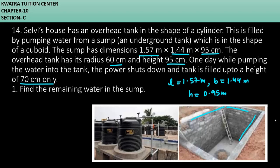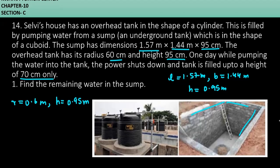And then you have a cylinder. The radius of cylinder is about 0.6 meter. The height is about 0.95 meter. What we have to find is remaining water in the sump. So yes, you will take the volume of sump first and then subtract it with the tank volume. So volume of sump will be equal to 1.57 into 1.44 into 0.95.